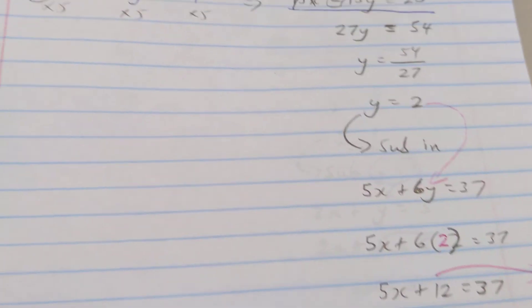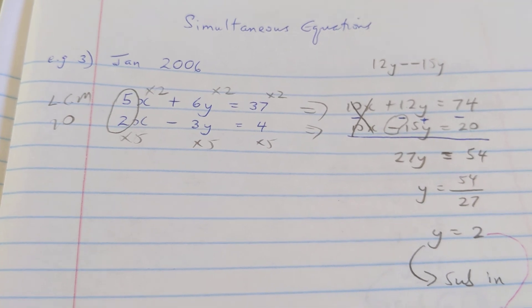So two answers for this one: x is 5, y is 2. And if you want, again, you can double check and see that it's working out to what it's supposed to work out.